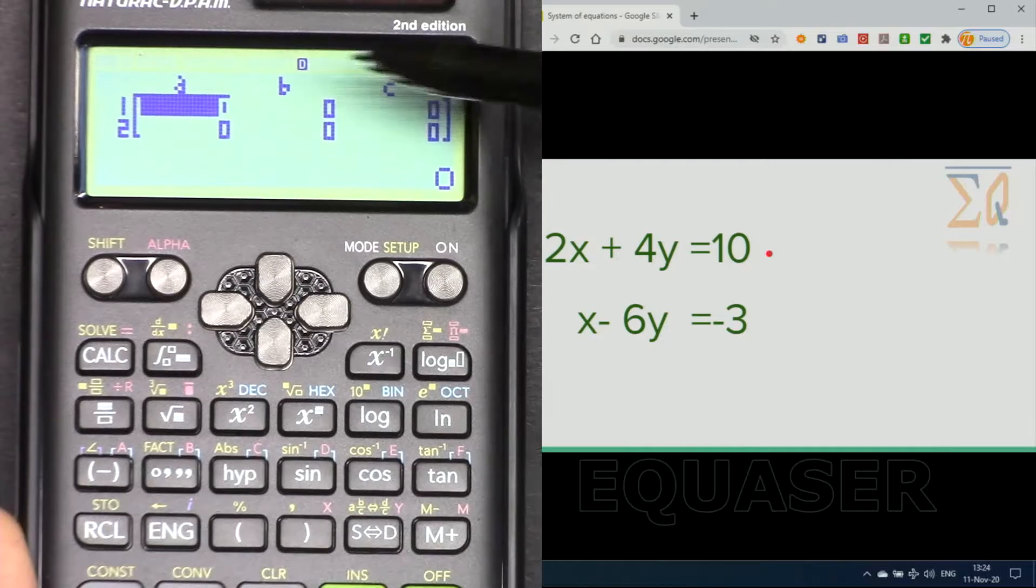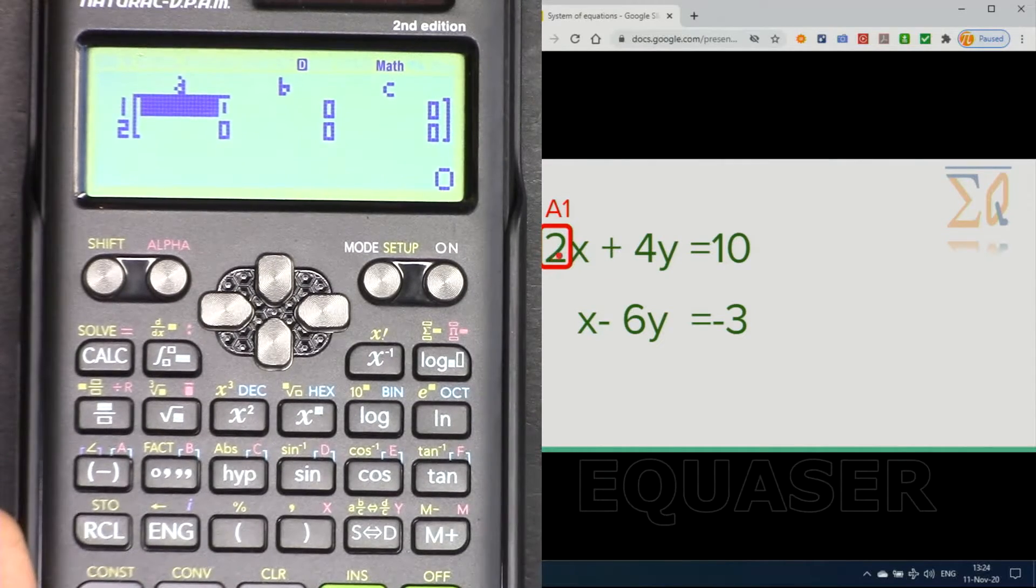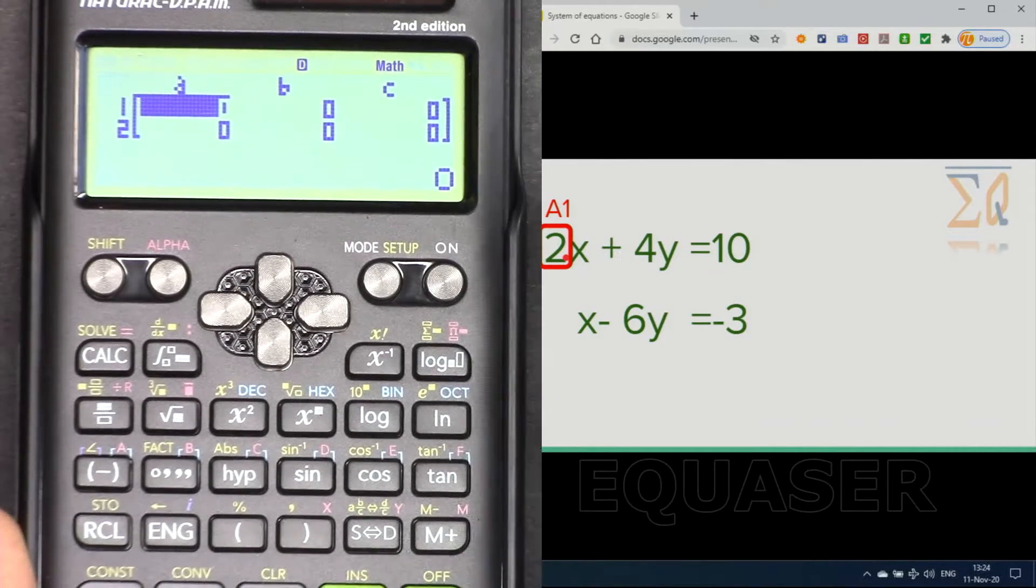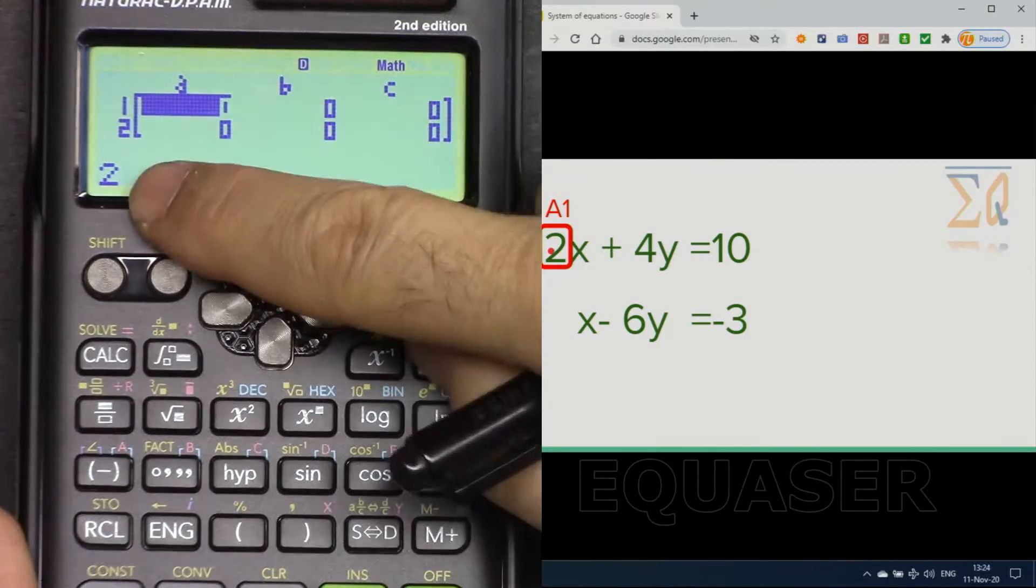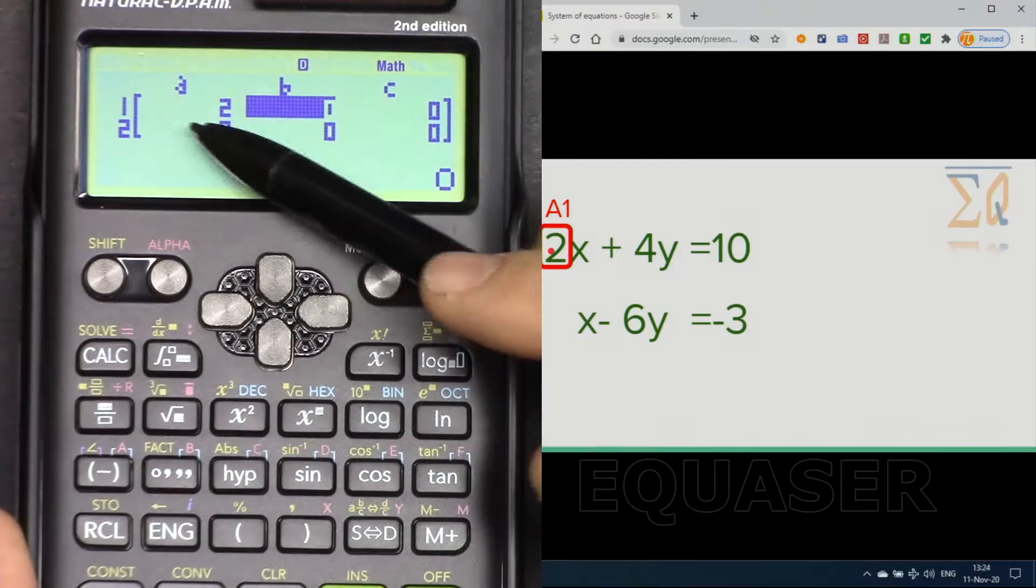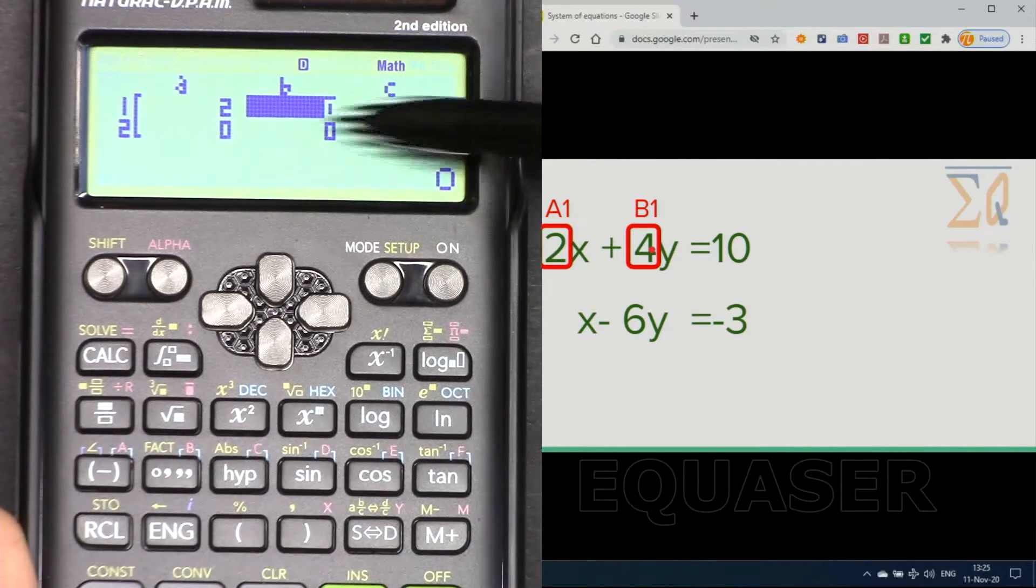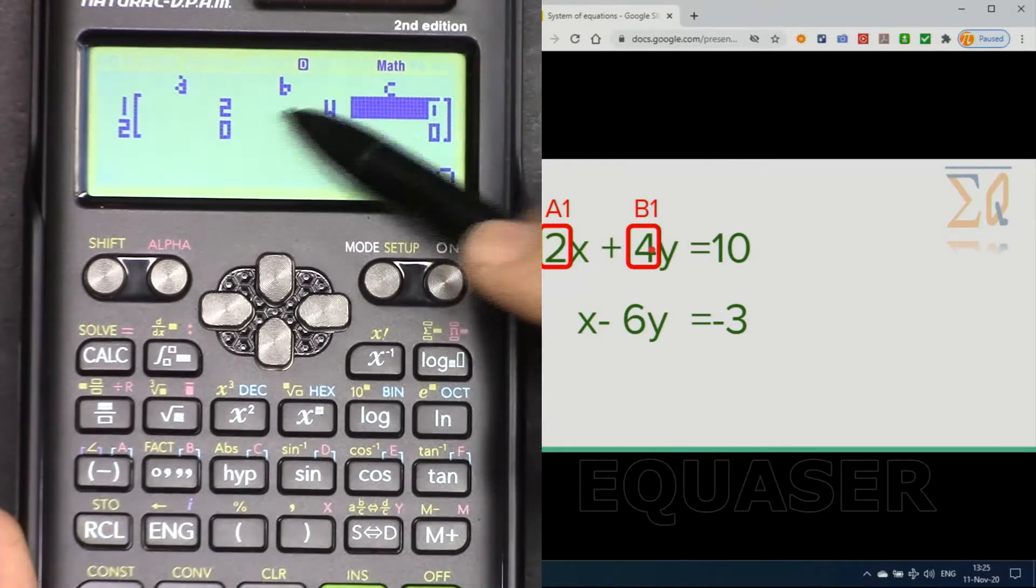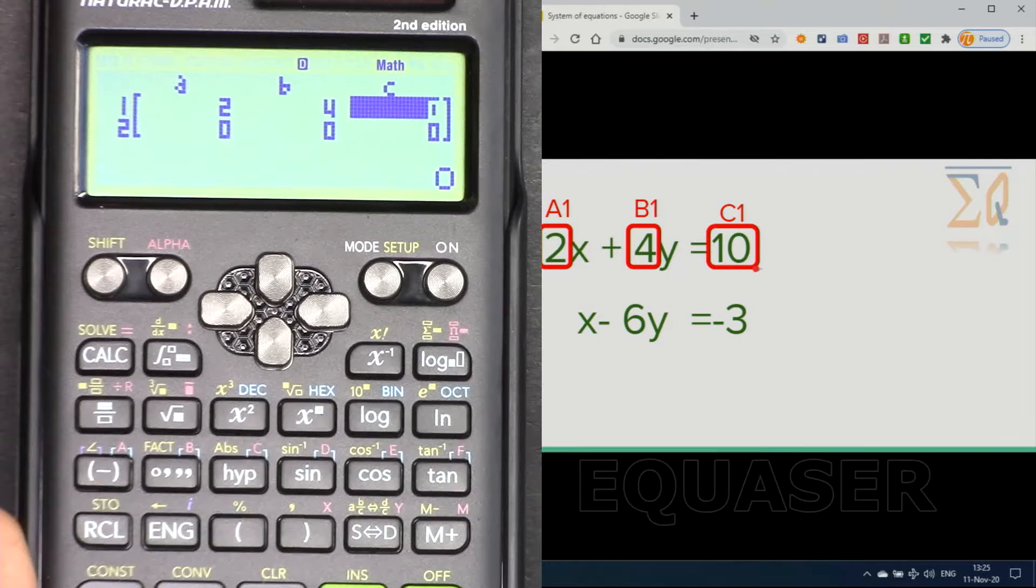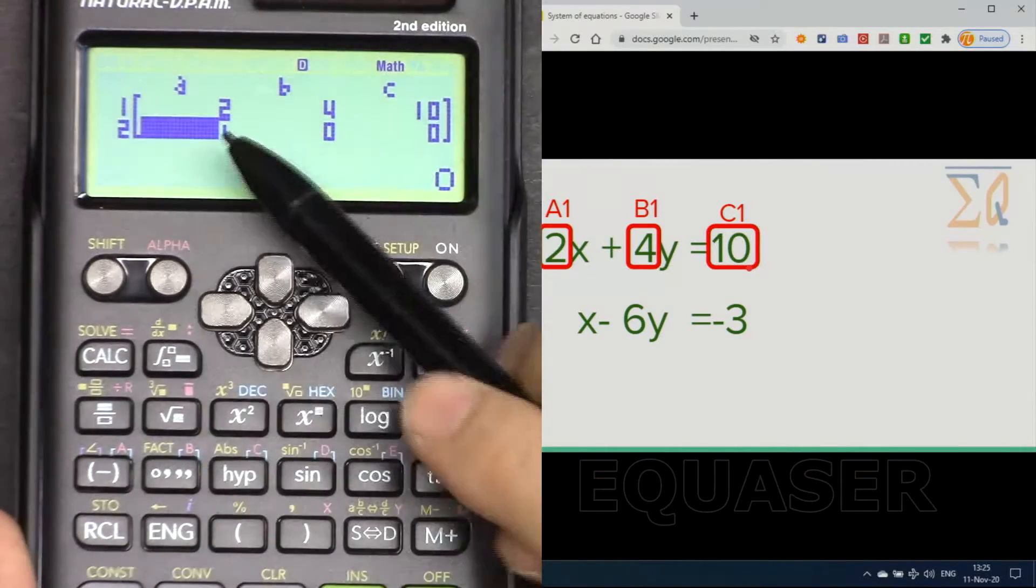One is referring to equation one, two refers to equation two. A, B, and C are the coefficients. So here a1 is this two, coefficient of x. We enter two and press equal. As soon as you press equal, the two will move here. For b1, this is equation one, so we enter four and then press equal and it moves to c1 which is 10. Press equal.